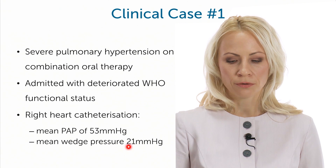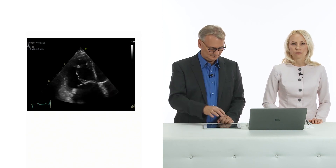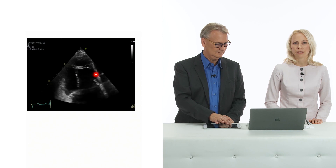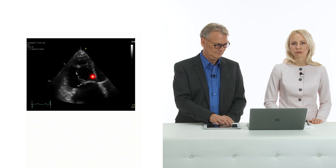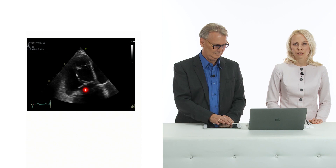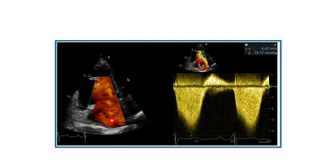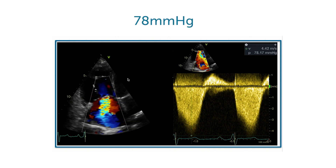Right heart catheterization shows this patient has really severe pulmonary hypertension with a mean pulmonary artery pressure of 53 mmHg. On echocardiography, the right ventricle is severely dilated and already appears dysfunctional. There is also significant tricuspid regurgitation, and the peak tricuspid regurgitation gradient is 78 mmHg, confirming severe pulmonary hypertension.